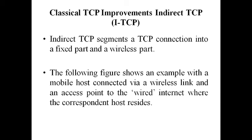Hello everyone. Today we will discuss about classical TCP improvements. In the last class we discussed about the problems with mobility if we use the same traditional TCP in wireless networks. Because mobility itself can cause packet loss. So there are many situations where mobility itself causes packet loss, but we cannot change traditional TCP completely. We can only introduce a few changes to TCP to support mobile users on wireless links.